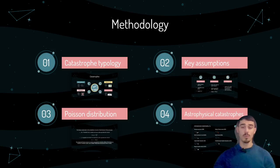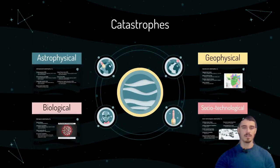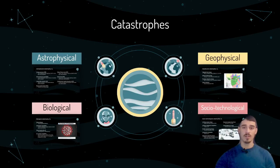Now we move on to the methodology. First, we are taking a look at the four different types of catastrophes. This is meant to clarify the four different types as described in this paper without going into too much detail, while later only concentrating on the astrophysical threats. Feel free to pause the video at any time to take a more detailed look.